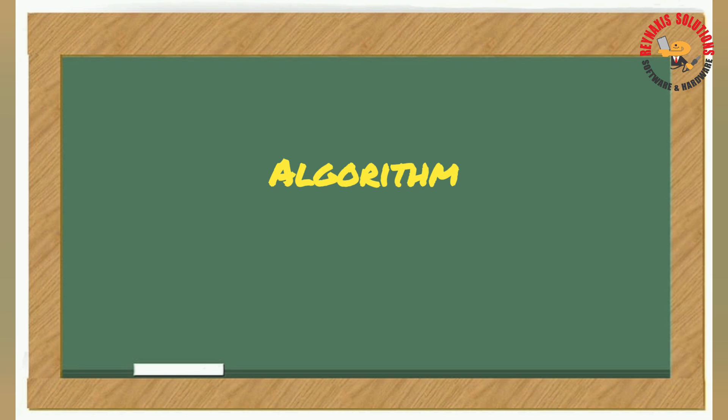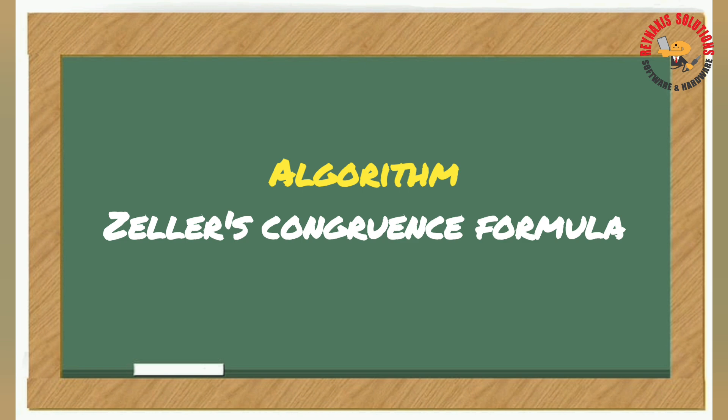There is an existing algorithm created by Christian Zeller, a German mathematician in the late 19th century, and it's called the Zeller's Congruence formula.